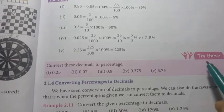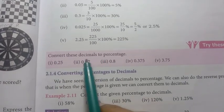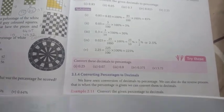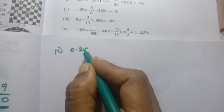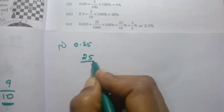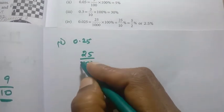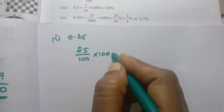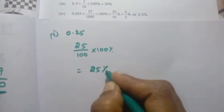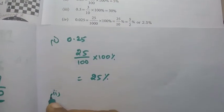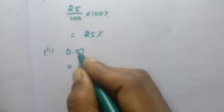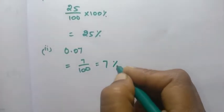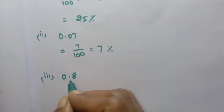Page number 33, try these: convert these decimals to percentage. First: 0.25. Write as 25 by 100, then into 100 percentage = 25 percentage. Second: 0.07 — two decimal places, so 7 by 100 — 7 percentage.